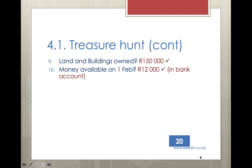Question 10: How much money was available to the business on the 1st of February 2010? The answer is R12,000 Rand. This is a slightly trickier question — the money available is not necessarily the total amount invested by the owner, as it might already have been used. Instead, look at the bank account in the general ledger. The question asks for how much was available on the 1st of February, i.e., at the beginning of the month. On the debit side of the bank account at the top, you can see the balance brought down was R12,000 Rand.